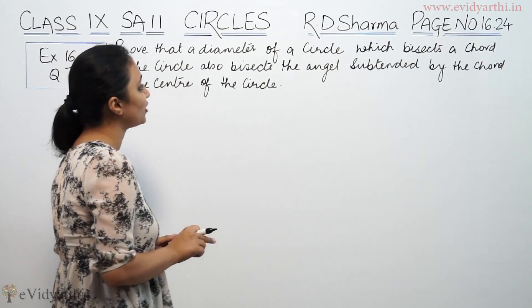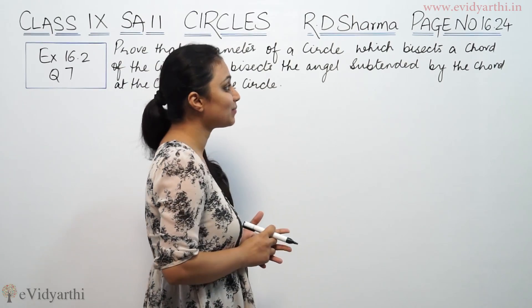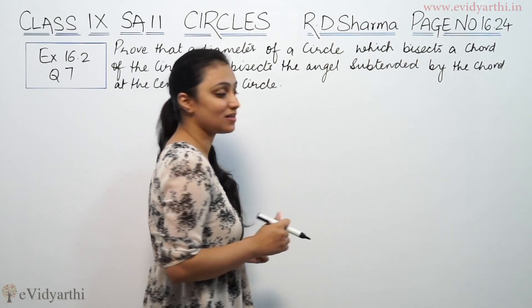It says, prove that the diameter of a circle which bisects a chord of the circle also bisects the angle subtended by the chord at the center of the circle.